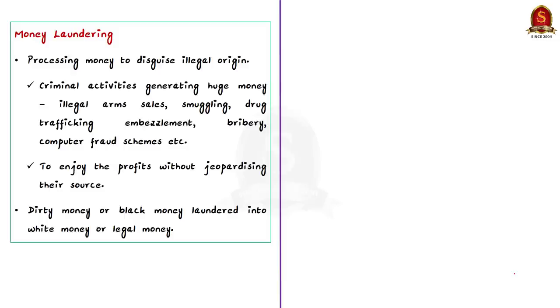To understand the verdict, first of all you need to understand about money laundering. Money laundering is the processing of money earned from doing criminal and illegal activities. The processing is done to hide the illegal origin. Many criminal activities generate huge amounts of money. The criminal activities such as illegal arms sales, smuggling, drug trafficking, prostitution rings, embezzlement, insider trading, bribery, computer fraud schemes, etc. generate large amounts of illegal money.